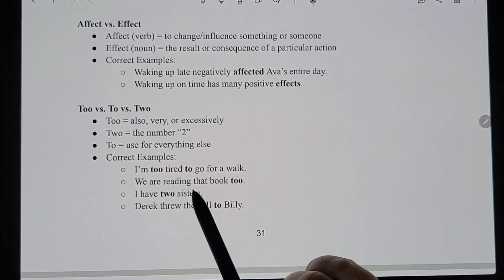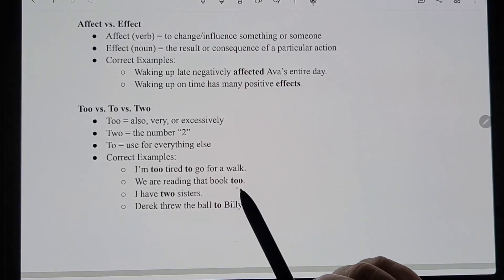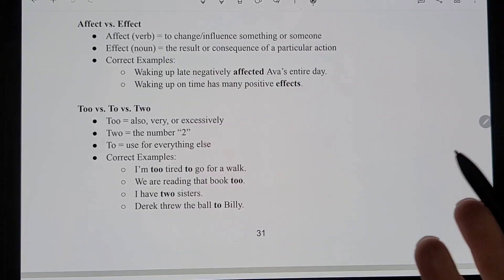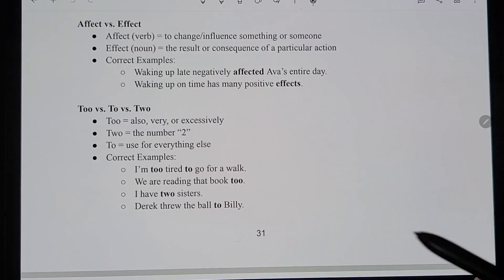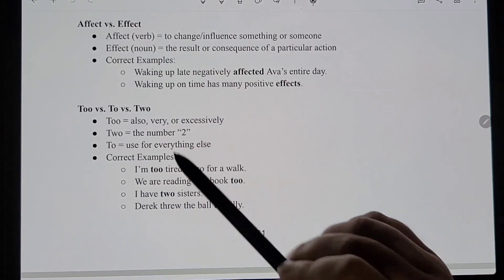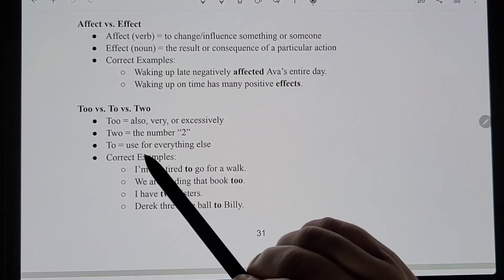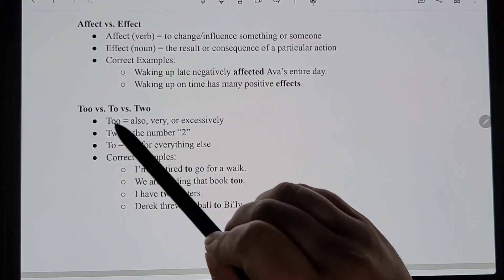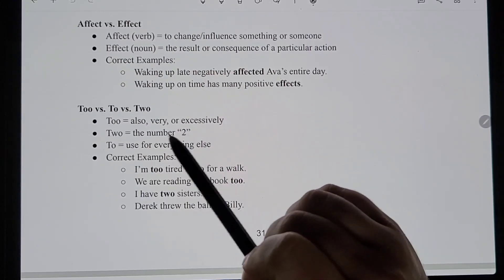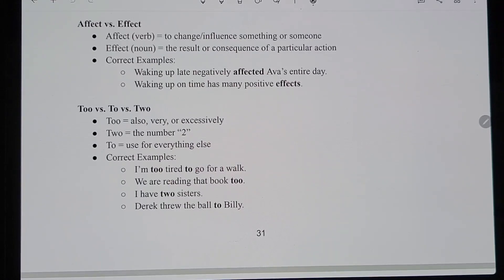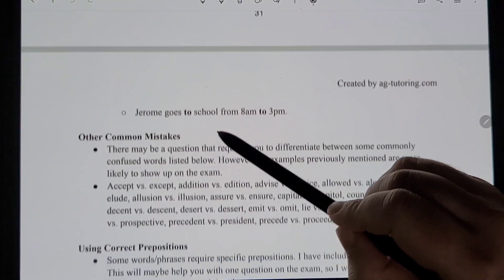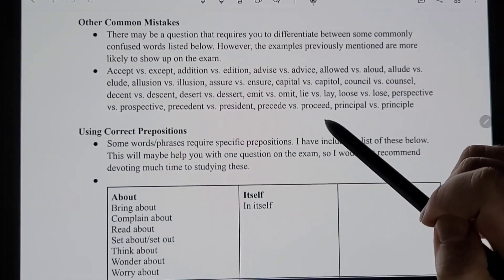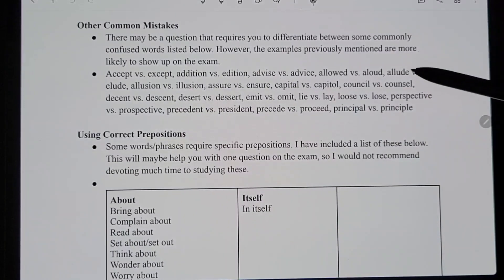'We are reading that book too' — meaning 'also,' that's the double-O. 'I have two sisters' — the number, so T-W-O. 'Derek threw the ball to Billy' — the single-O covers everything else, and there are so many ways to use it. If you just know the double-O versions — excessively/very and also — and treat single-O as everything else, you're golden. You could also say: 'Jerome goes to school from 8 a.m. to 3 p.m.'